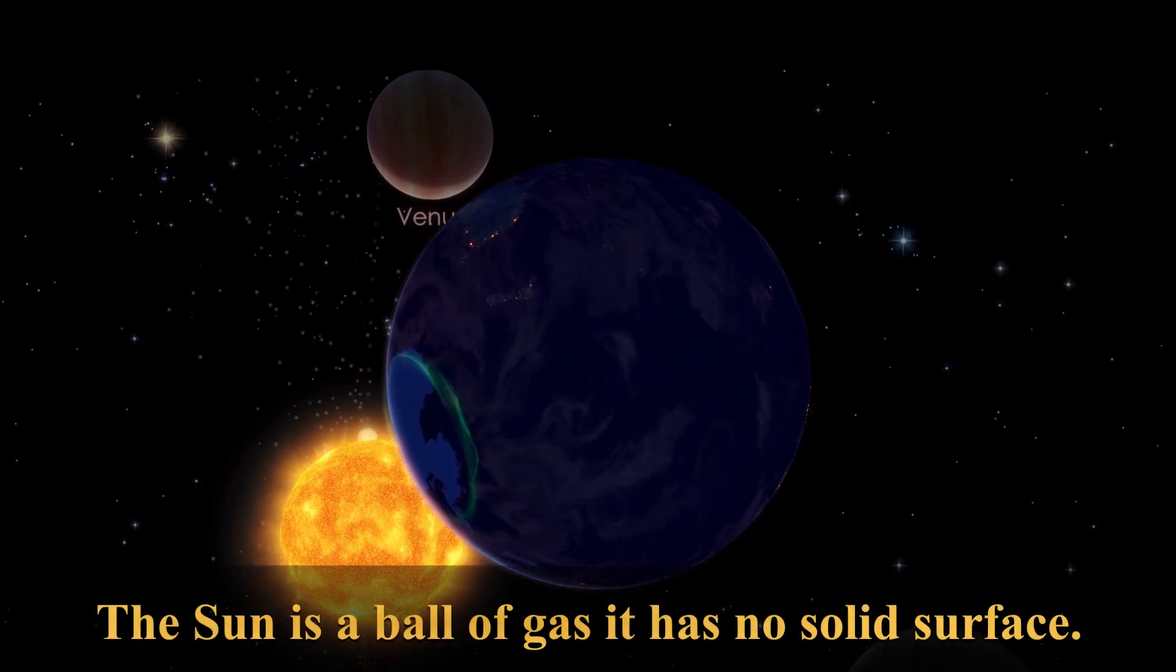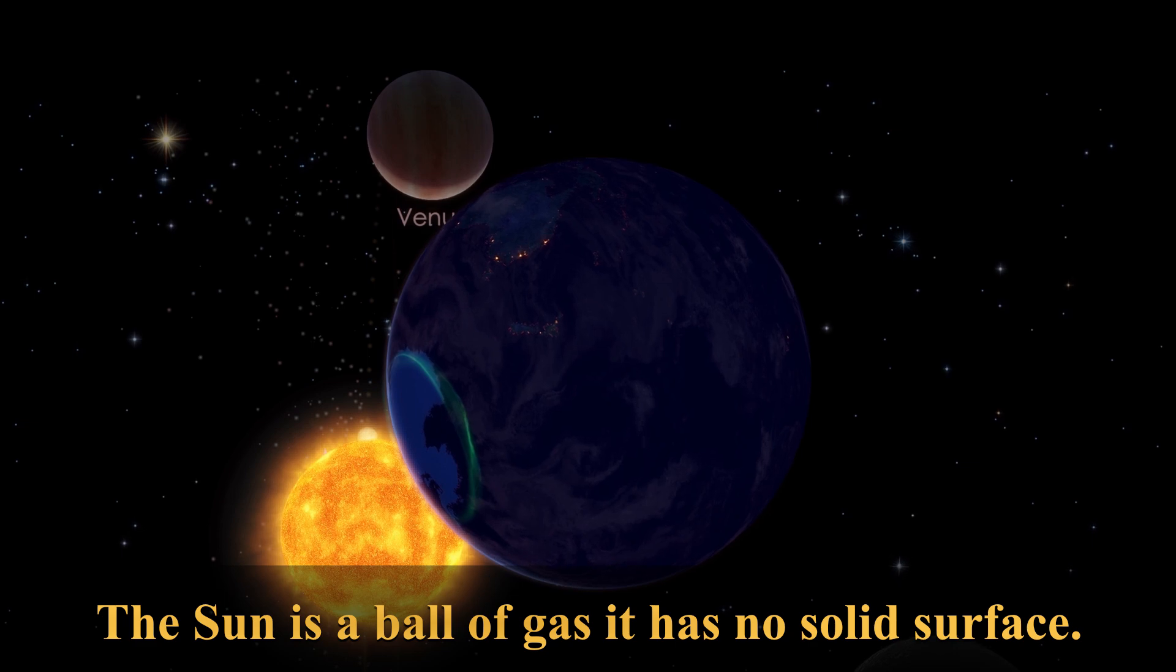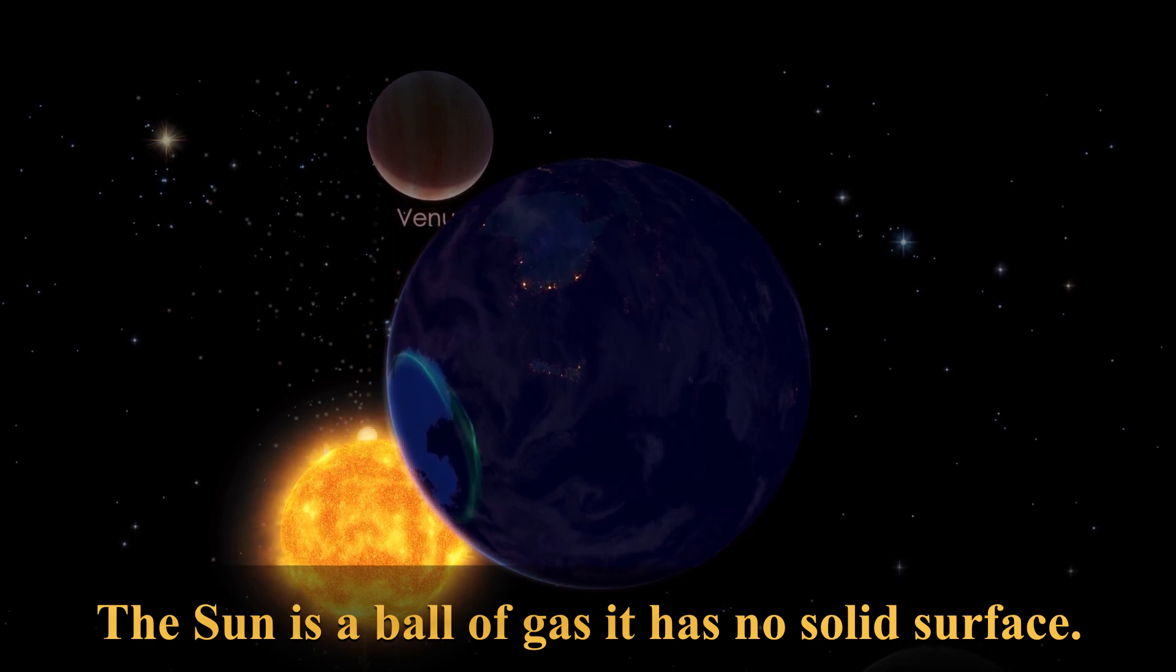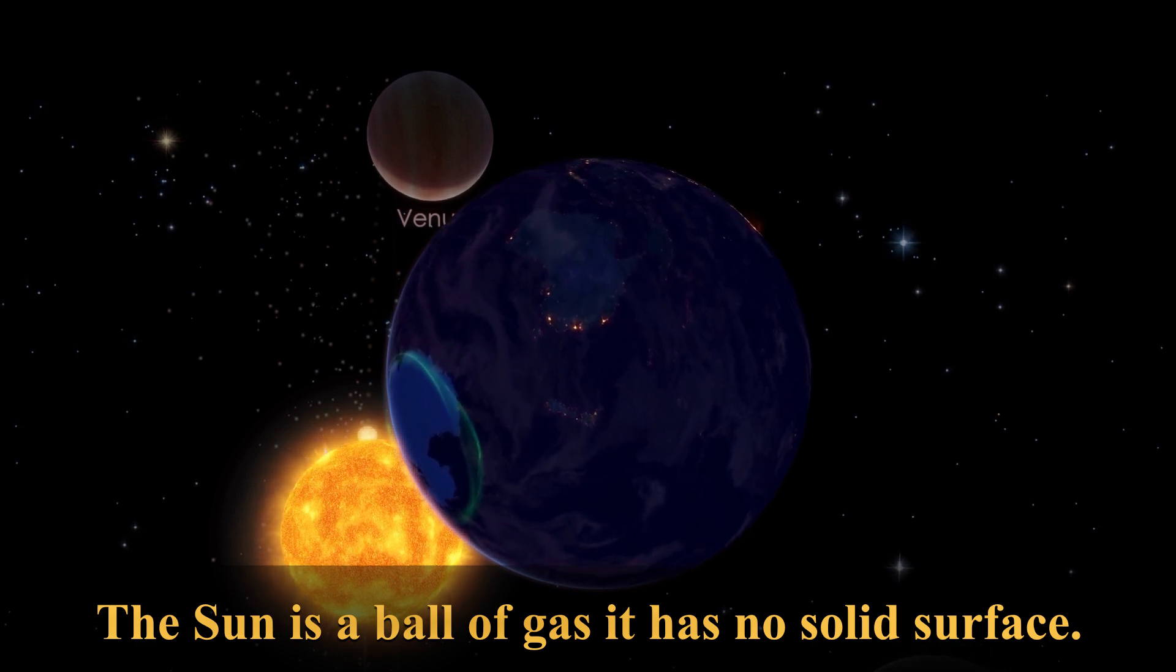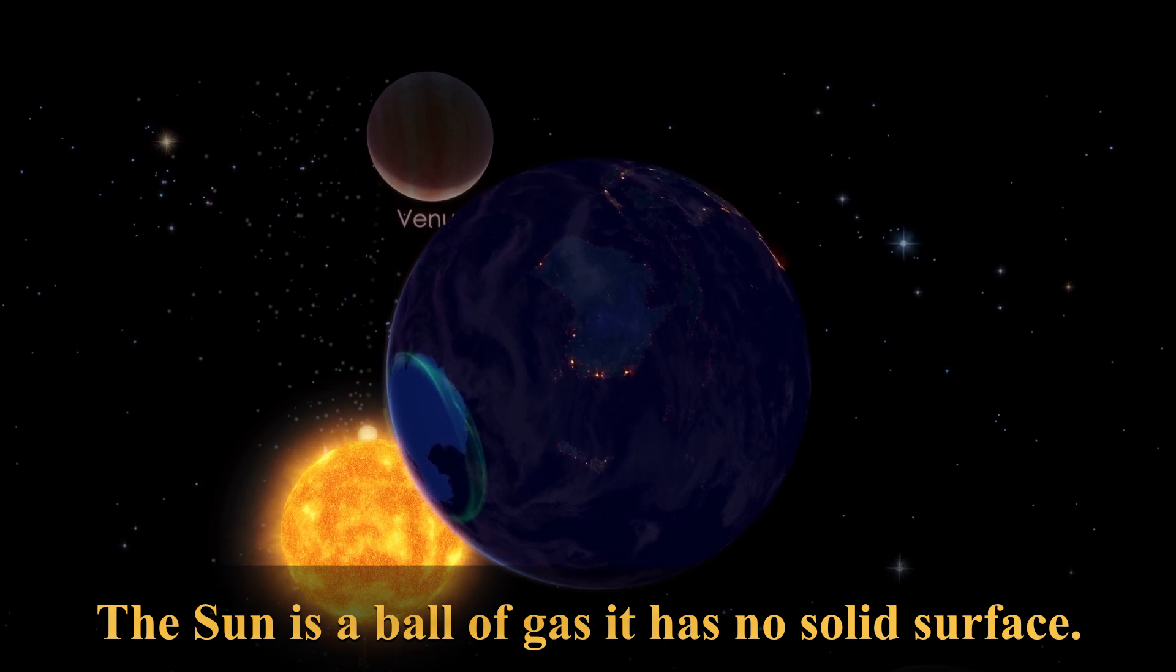The Sun is a ball of gas. It has no solid surface, unlike the Earth. Its density decreases exponentially with increasing distance from its center.